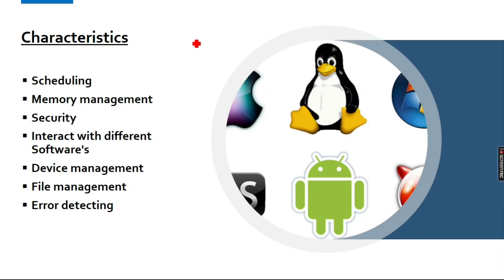The characteristics of the operating system: when the operating system loads, it will work together with other software. It manages all the speed and resources of the software. If you want to serve output to the user, it handles memory and management. It also provides security — for example, if you want to log in to your computer, you can log in with a password, and that password is managed by the operating system.